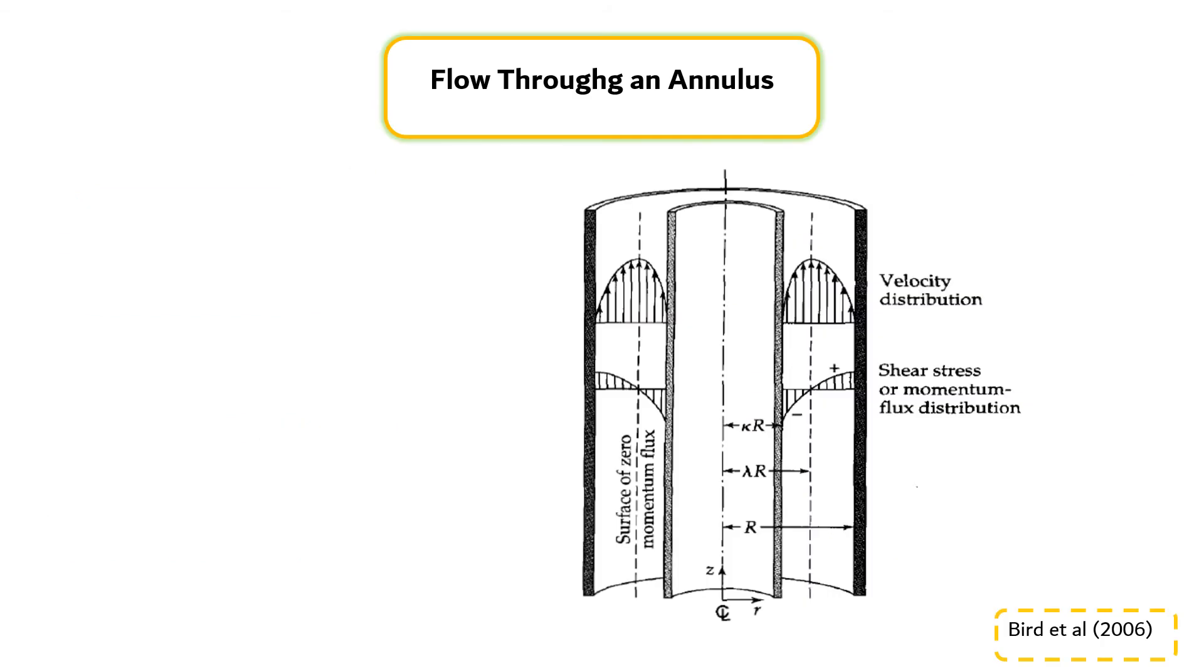Let's consider another viscous flow problem in cylindrical coordinates, namely the steady-state axial flow of an incompressible liquid in an annular region between two coaxial cylinders of radii kR and R as shown in the figure. The fluid is flowing upward in the tube which is in the direction opposite to gravity.